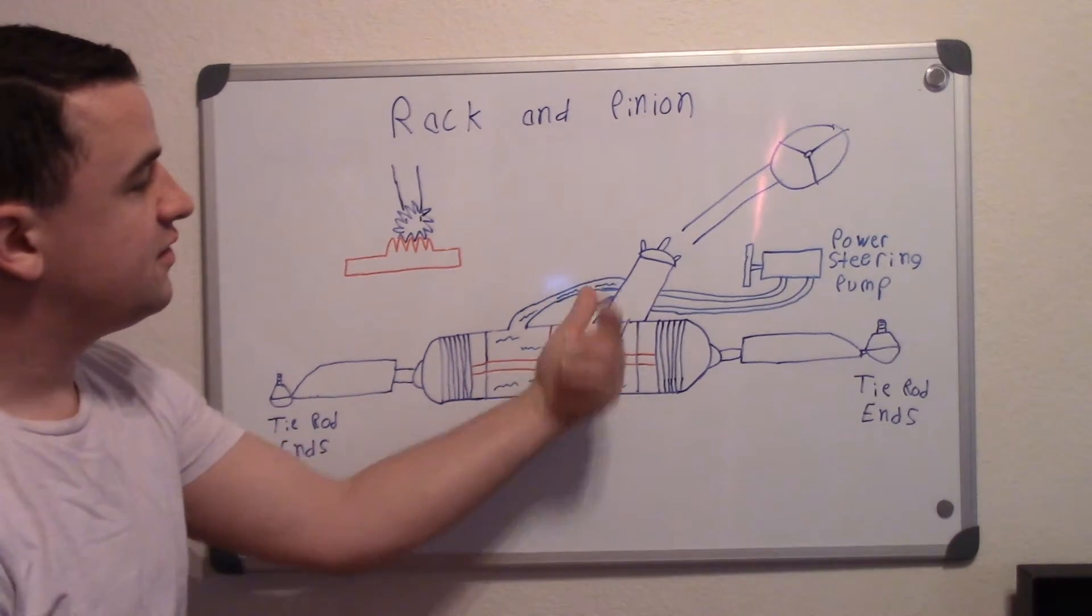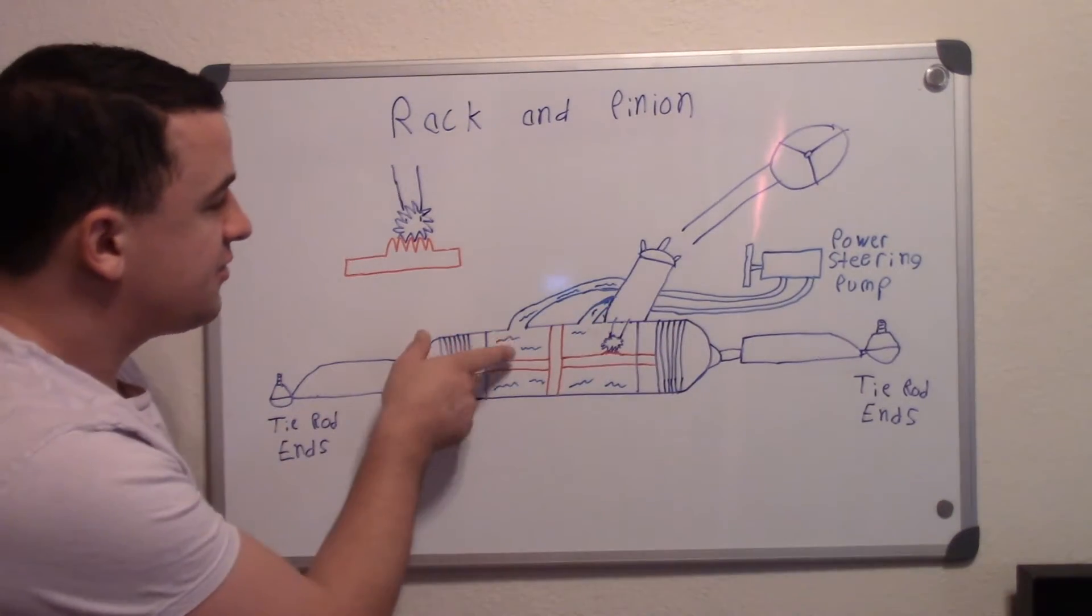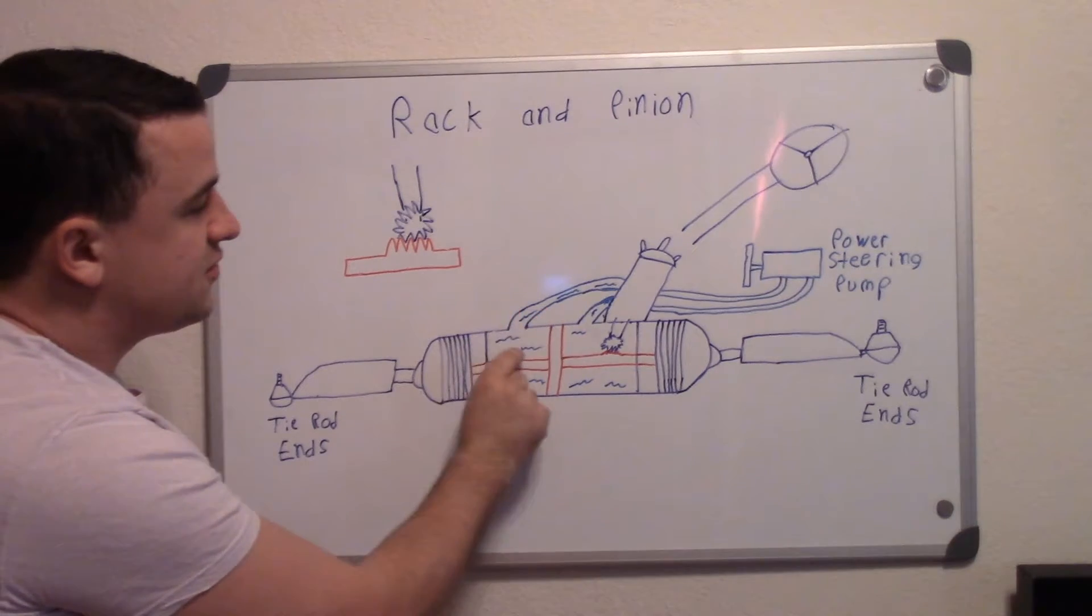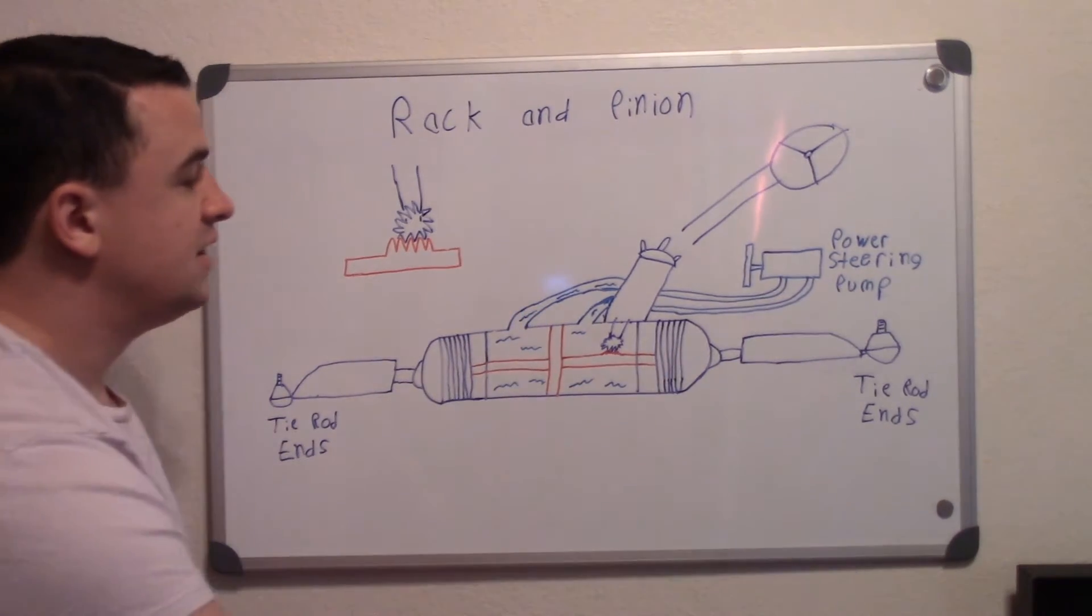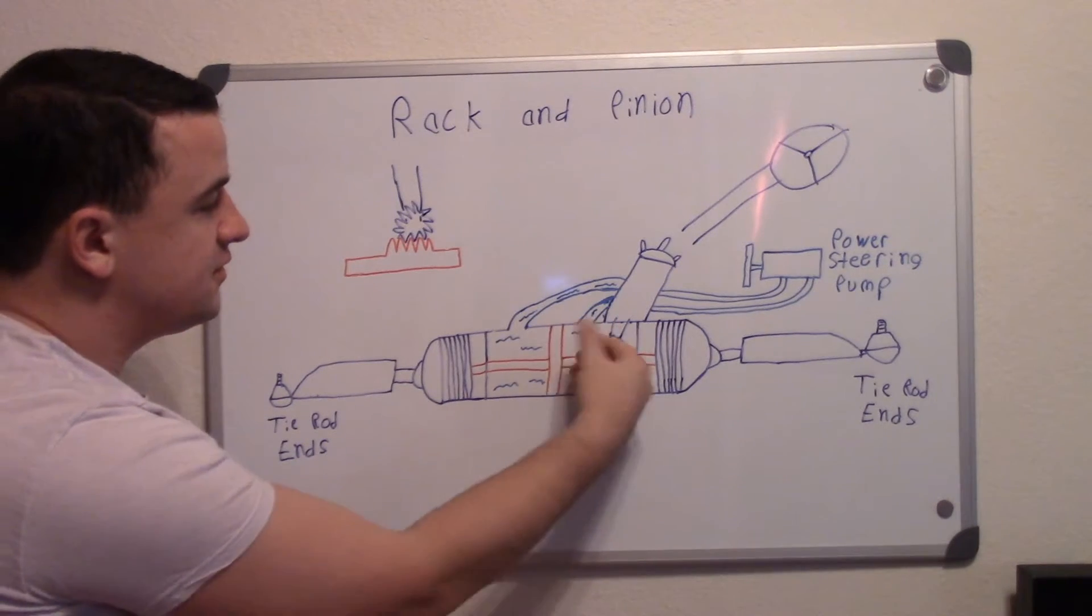When you turn the steering wheel, you're essentially in here, it'll allow liquid to flow one way. So if you want it to go this way, more pressure will come in here and push it that way. Then when you turn the steering wheel the other way, more fluid will come in through this hose and push it that way.